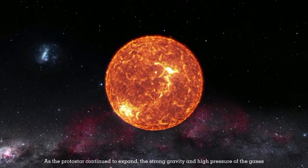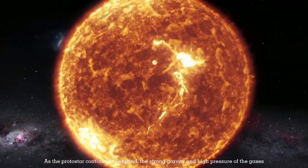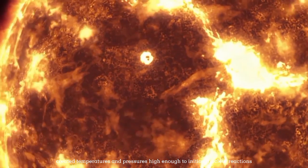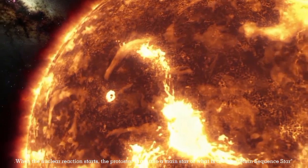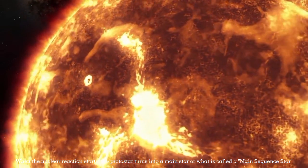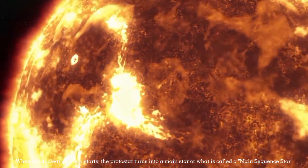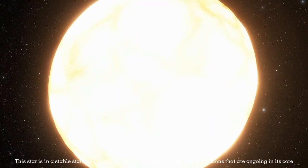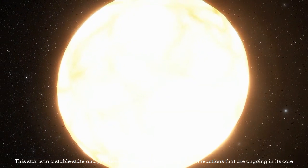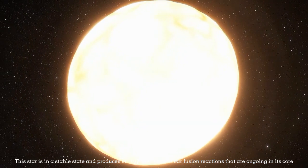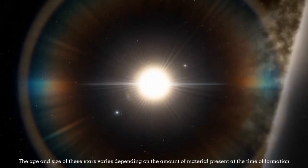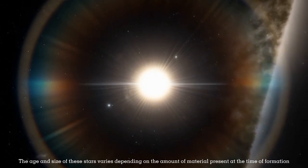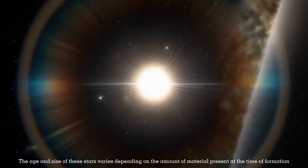As the protostar continued to expand, the strong gravity and high pressure of the gases created temperatures and pressures high enough to initiate nuclear reactions. When the nuclear reaction starts, the protostar turns into a main sequence star. This star is in a stable state and produces energy from the nuclear fusion reactions that are ongoing in its core. The age and size of these stars varies depending on the amount of material present at the time of formation.